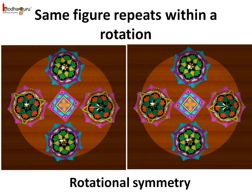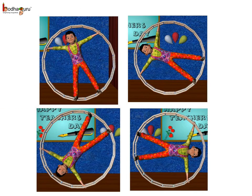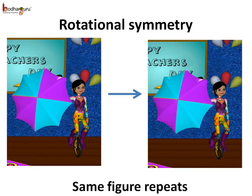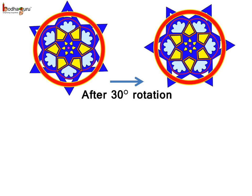It means a figure repeats itself while rotating. Let's make it clearer. Remember the boy rolling inside a ring on the stage? While he is rotating, no two figures look similar during a single rotation — so this is not an example of rotational symmetry. In rotational symmetry, the same figure repeats itself within a rotation. Here, only after one full rotation do any two positions look the same. While the girl was rotating the umbrella, the same figure repeats after just a half rotation.